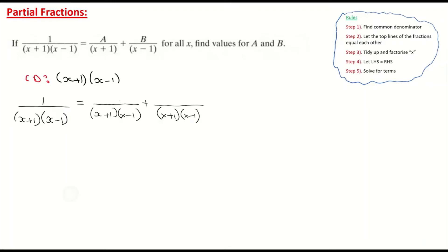I already have A on the top of my first fraction and B as the numerator on my second fraction. On my first fraction I've brought in the x minus 1 on the bottom, so I must multiply the top by x minus 1. And it's the same on the next fraction — I've brought in x plus 1, so I need to bring in x plus 1 on the top as well. Whatever I do to the bottom, I must do to the top.